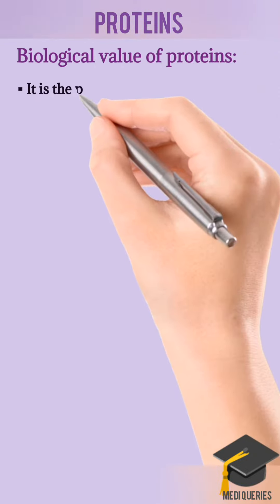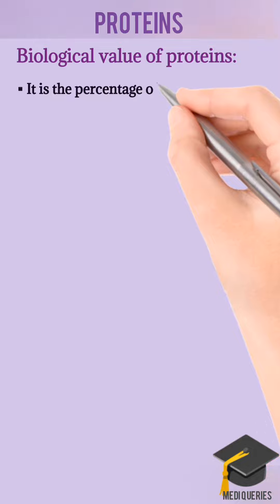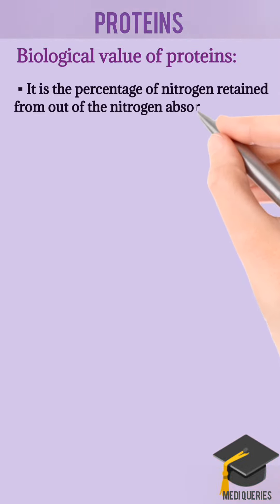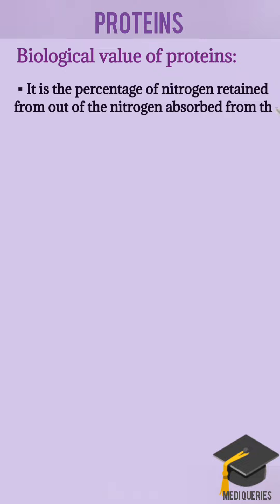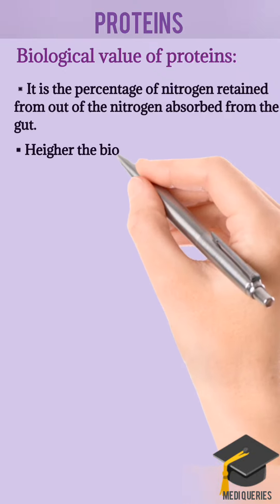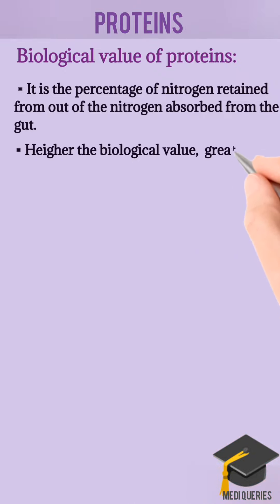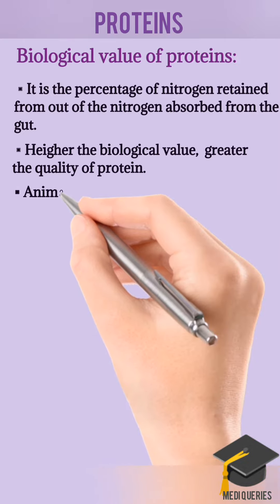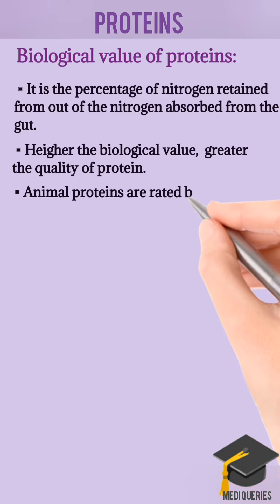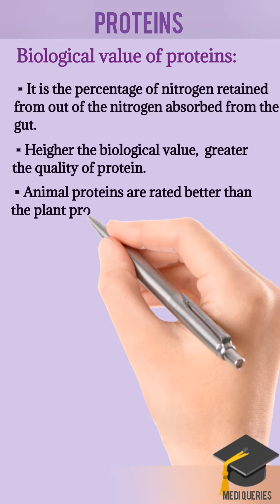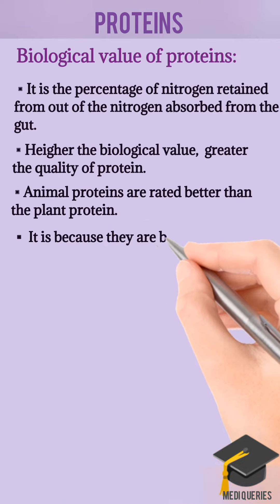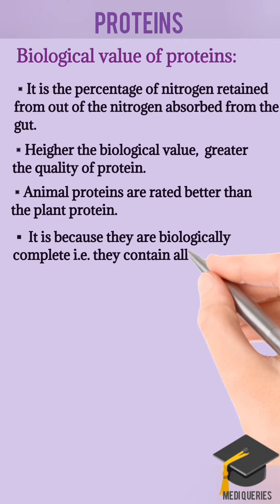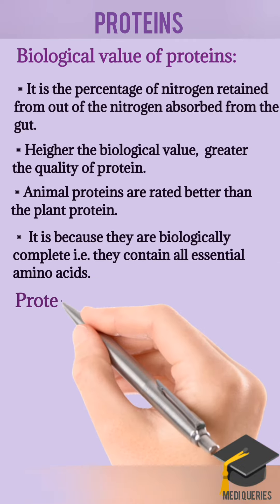Biological Value of Protein: It is the percentage of the nitrogen retained out of the nitrogen absorbed from the gut. Higher the biological value, greater the quality of the protein. Animal proteins are better than plant proteins because they are biologically complete and contain all essential amino acids.